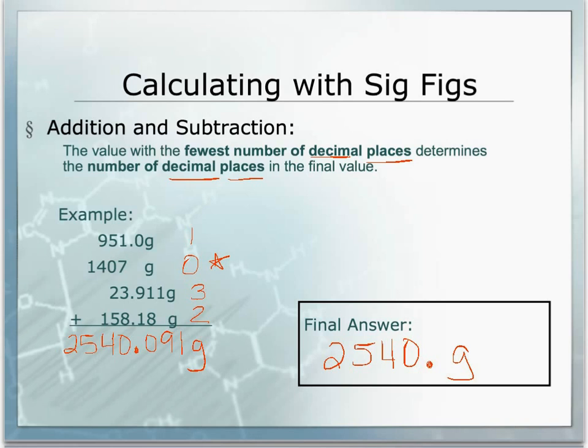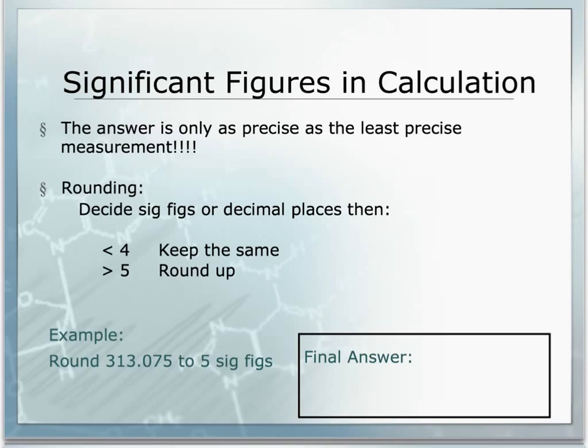With adding and subtracting we're looking at decimal places. When doing calculations with measurements it's important to keep track of significant figures because the answer can only be as precise as the least precise measurement. With multiplication and division we're looking at the fewest number of sig figs; with addition and subtraction the fewest number of decimal places. For rounding: below five you keep the same, five and higher you round up.